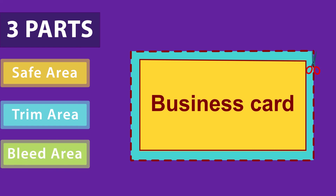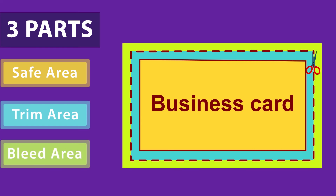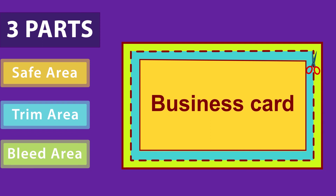The third one is bleed. Bleed is the area which is around the trim area. Artwork that reaches the trim line — like a background image or fill color — must extend to the bleed area. Every printed document must have these three parts. In the next video, we will design the setup of a business card in Adobe Illustrator.